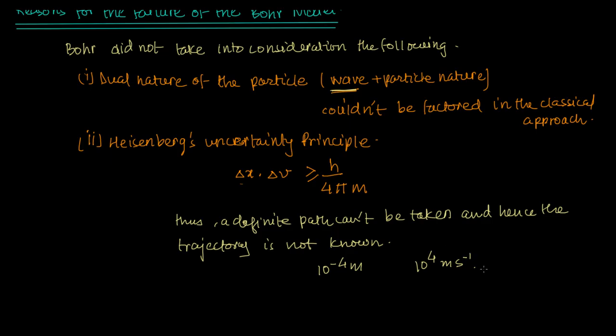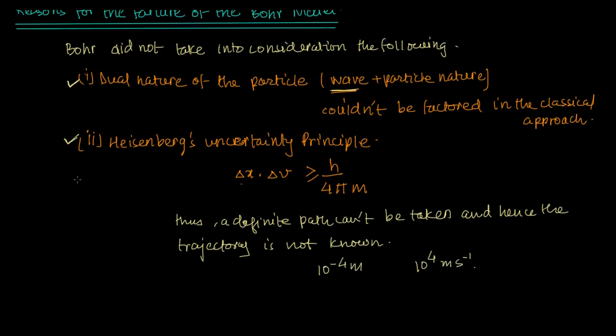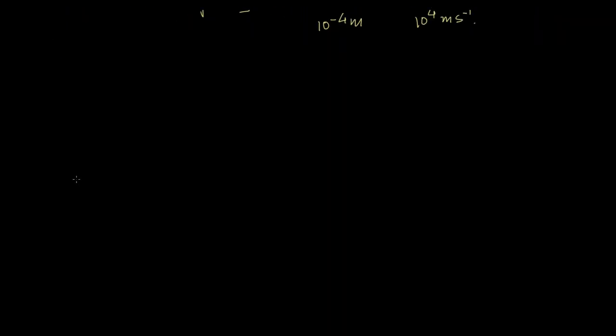We took a real life example. It was this that led to the failure. Once it led to the failure, obviously anything that had to predict it with accuracy had to take into consideration these two facts. This is what the quantum mechanical model of the atom does.